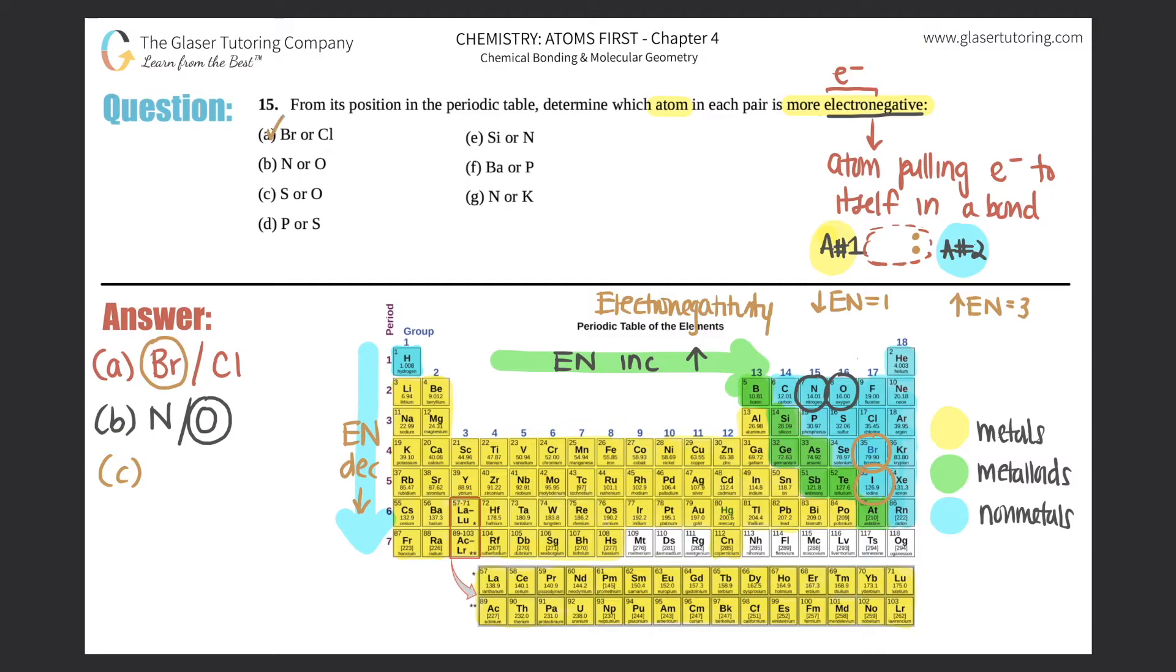C, sulfur or oxygen? Well, oxygen is here. Sulfur is over here. As you go down, electronegativity decreases. So which one would have the higher electronegativity? Oxygen. So oxygen wins again. It would pull electrons more closer to itself than sulfur.